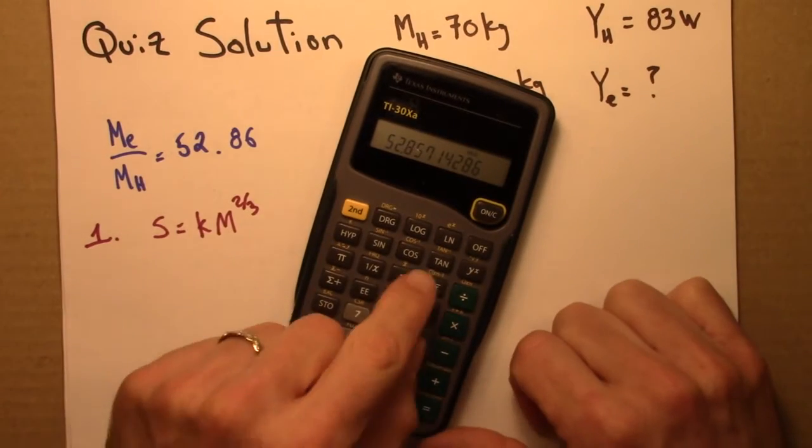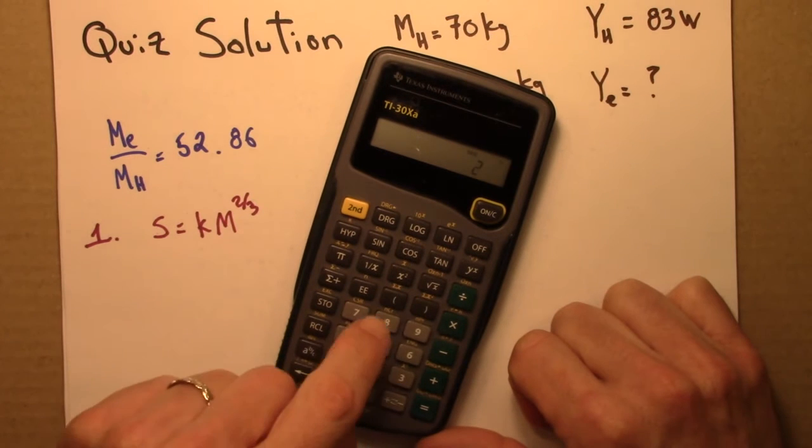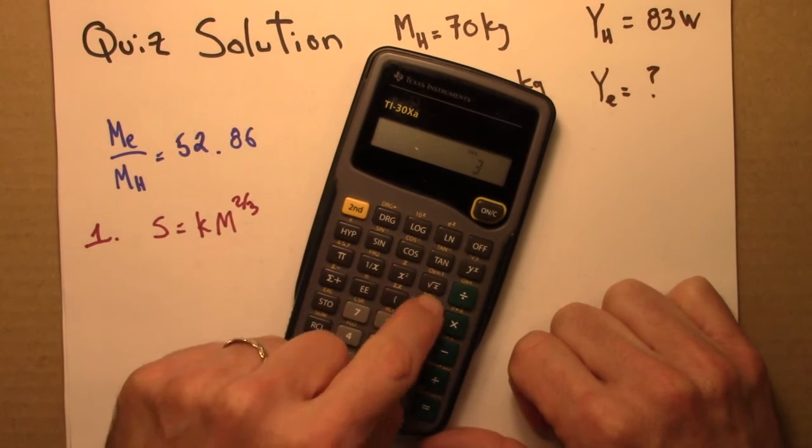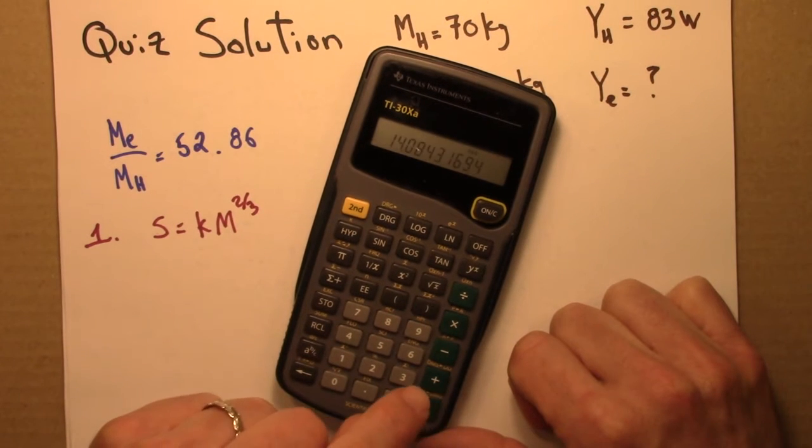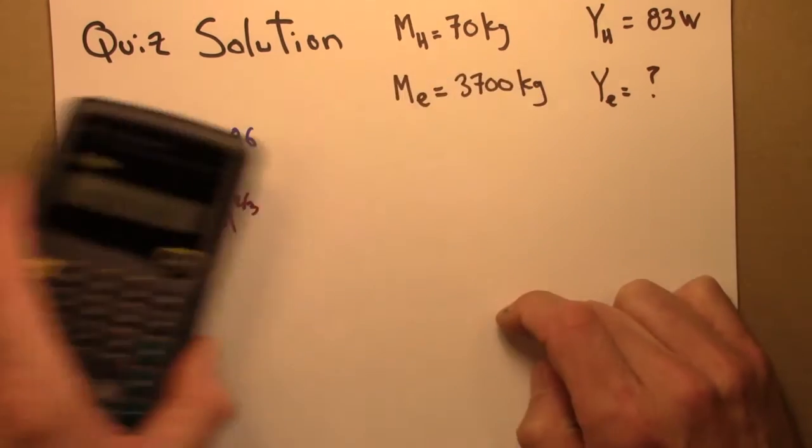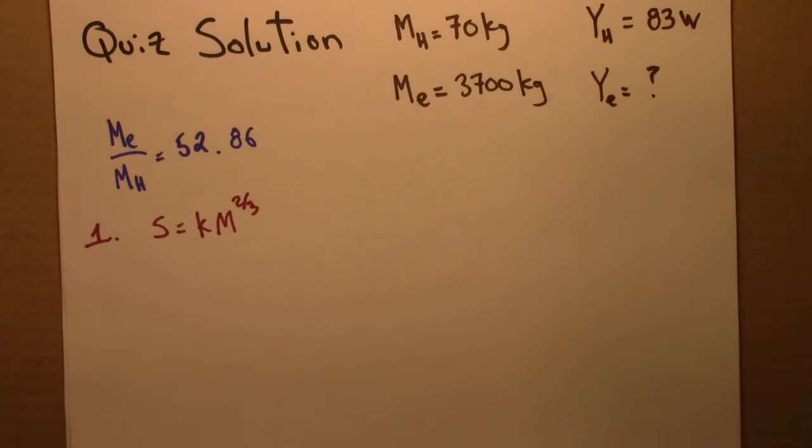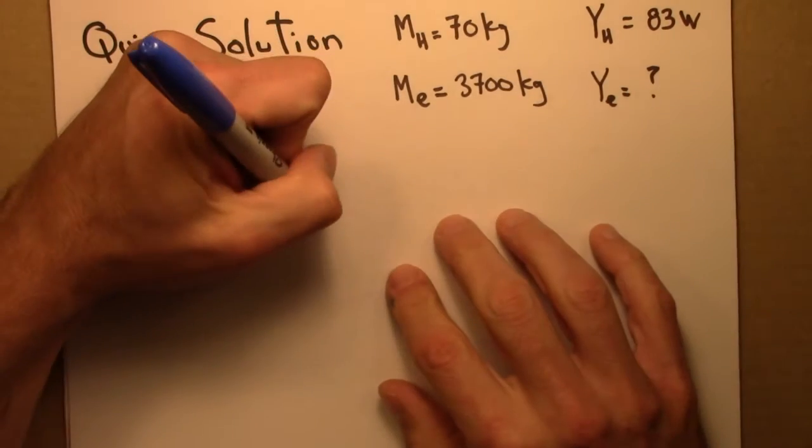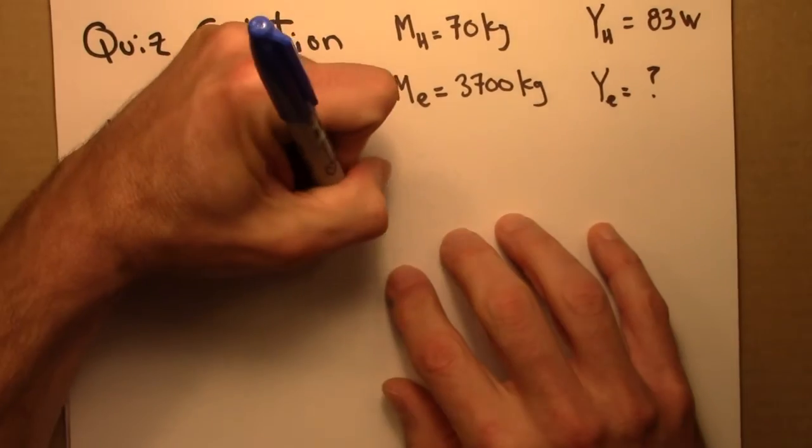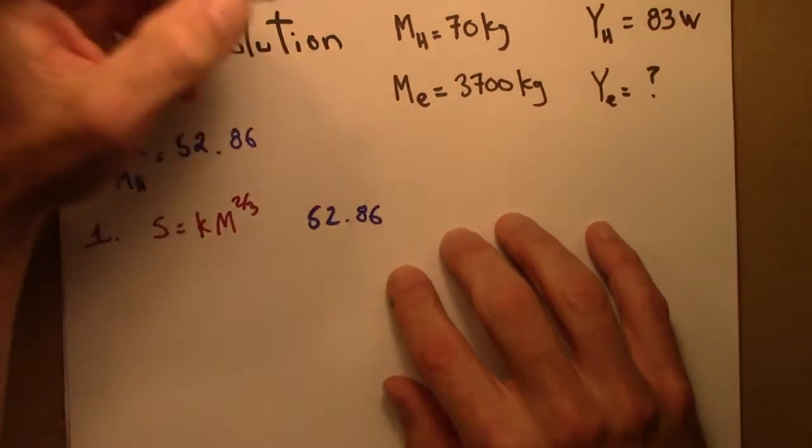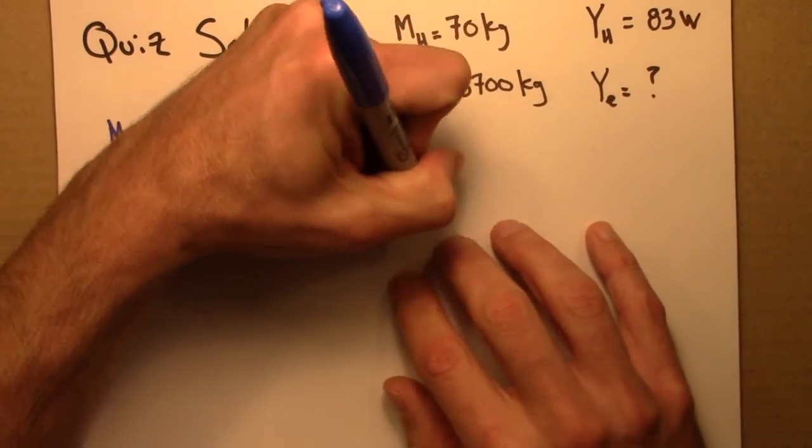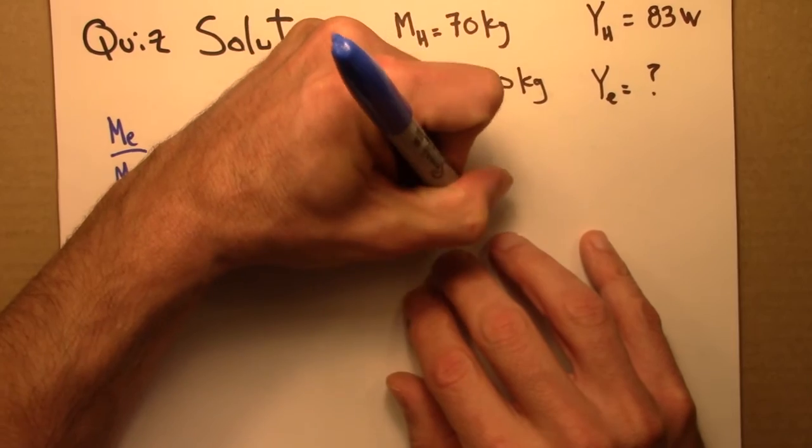So take this, raise it to the two-thirds power, and I get 14.08. So that tells me that 52.86 to the two-thirds is about 14.08.